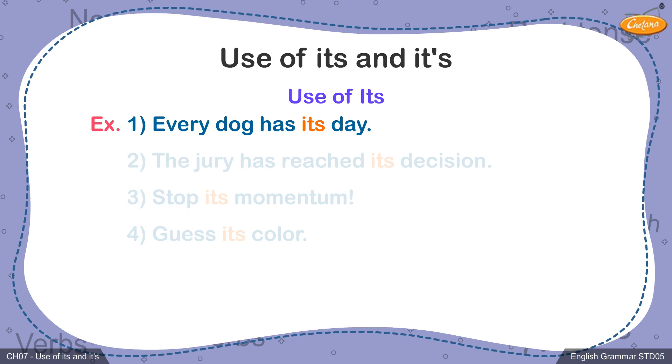In the first sentence, its is used to refer to the noun dog who will have his day. In the second sentence, its is used to refer to the jury's decision. Similarly, in other sentences, its is used to refer to an object's momentum and the color of the object.